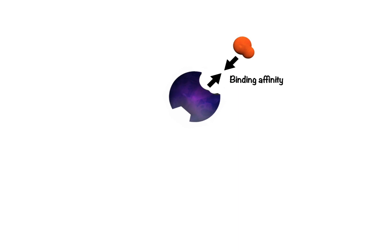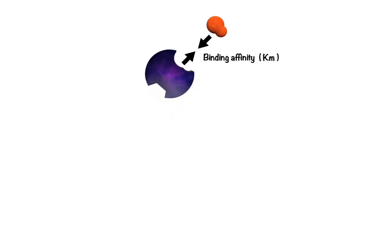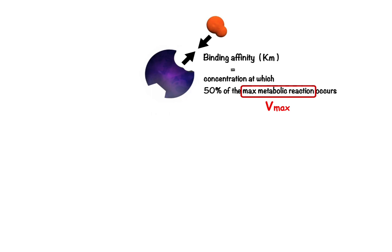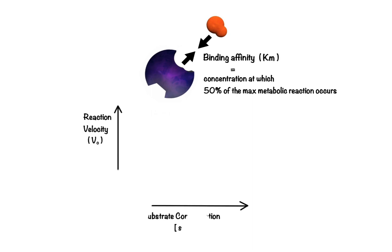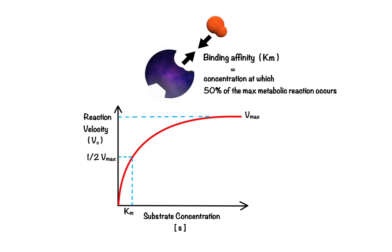Binding affinity to an enzyme is measured by the Michaelis constant, Km, which is the concentration at which 50% of the maximum metabolic reaction, known as Vmax, occurs. More precisely, Vmax is defined as the maximum speed of product creation for a given amount of enzyme. This can be better understood by looking at the Michaelis-Menten plot, which relates the reaction velocity — or how fast the reaction is going — as a function of increasing substrate concentration. As the concentration of substrate increases along the x-axis, the curve begins to flatten out as it approaches Vmax. In other words, at some point there is so much substrate that the enzymes are already working as fast as they can, and once this saturation point is reached, the addition of any new substrate has no effect on how fast the enzyme can work.